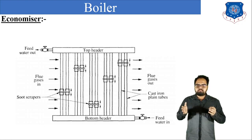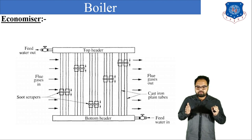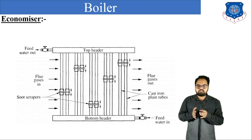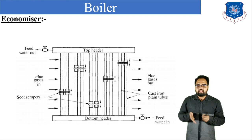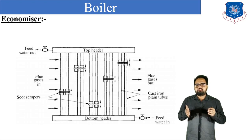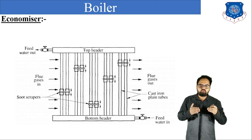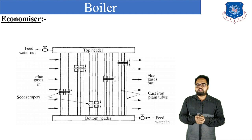First of all, what is an economizer or what is the function of an economizer? Whenever we directly supply 25 degree Celsius water to a 900 degree Celsius boiler drum, there is a large temperature difference and due to that, stress is generated inside the tubes and there may be chances of damage to the tubes. We are also exhausting flue gases which are released directly to the atmosphere through the chimney. If we use those flue gases to increase the water temperature preliminarily, there is a slight increase in temperature of the water.